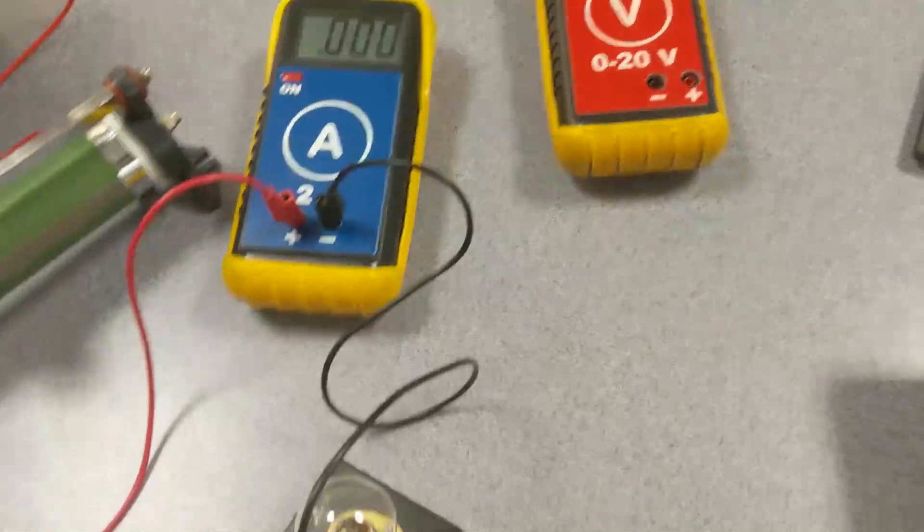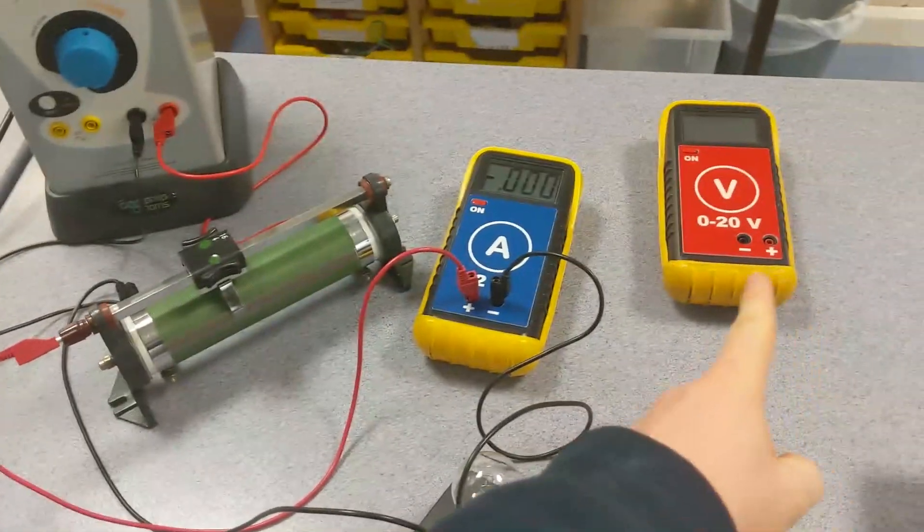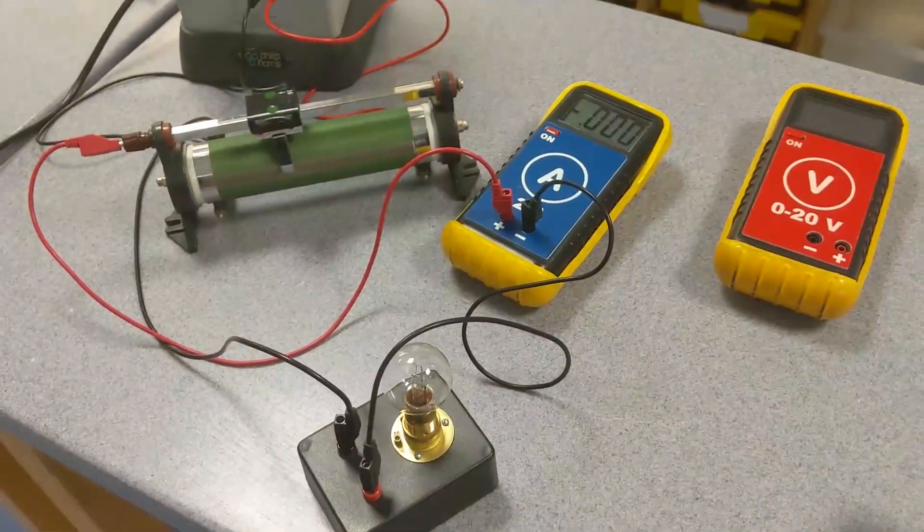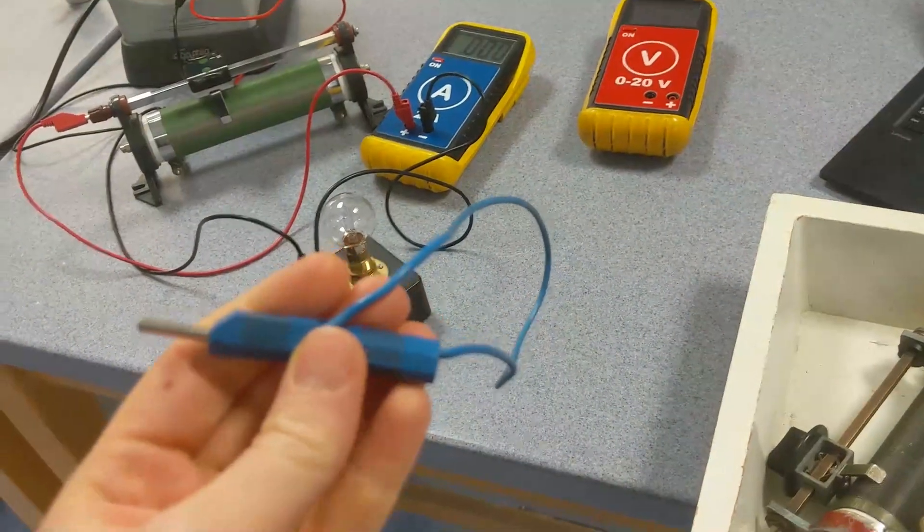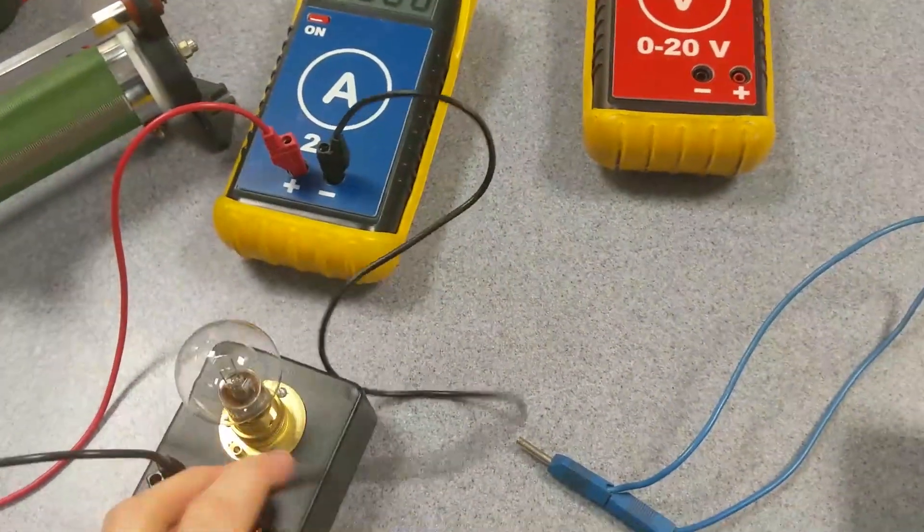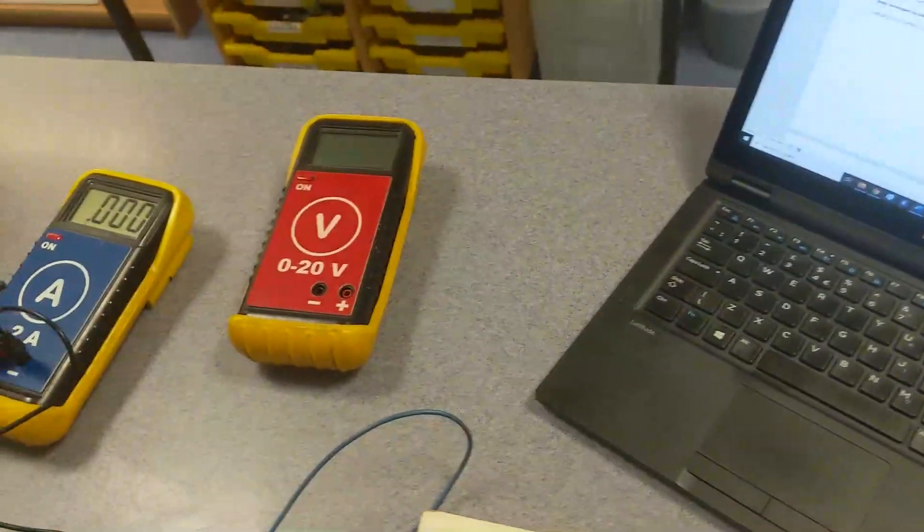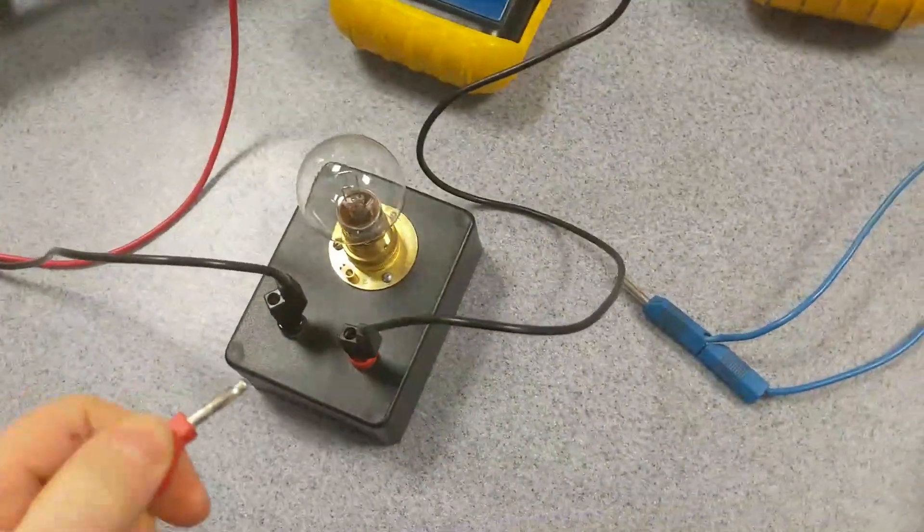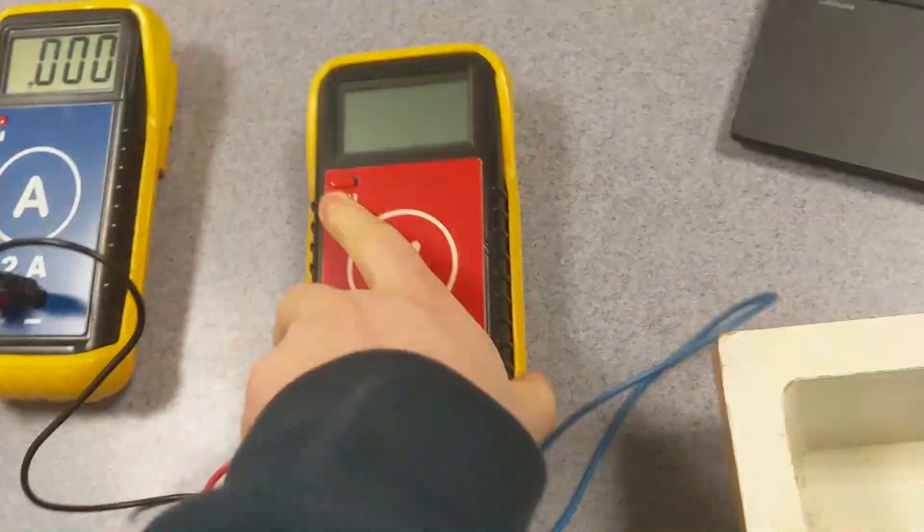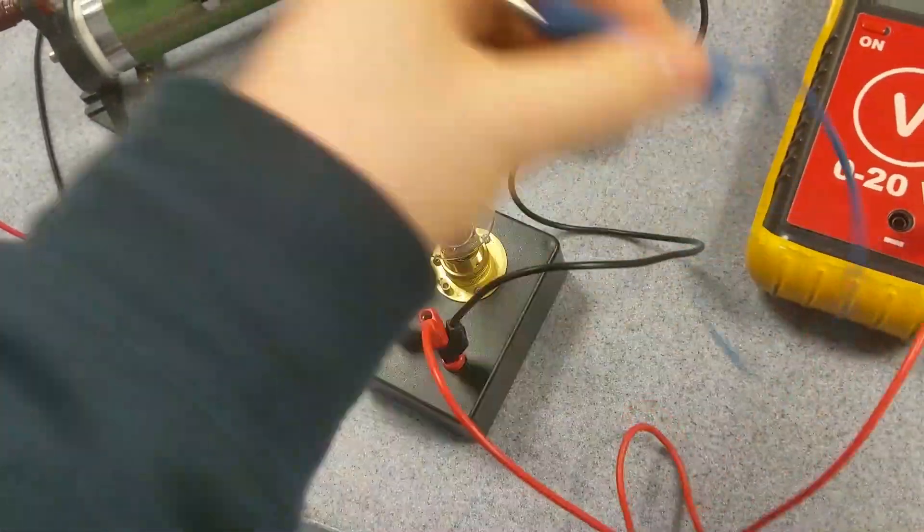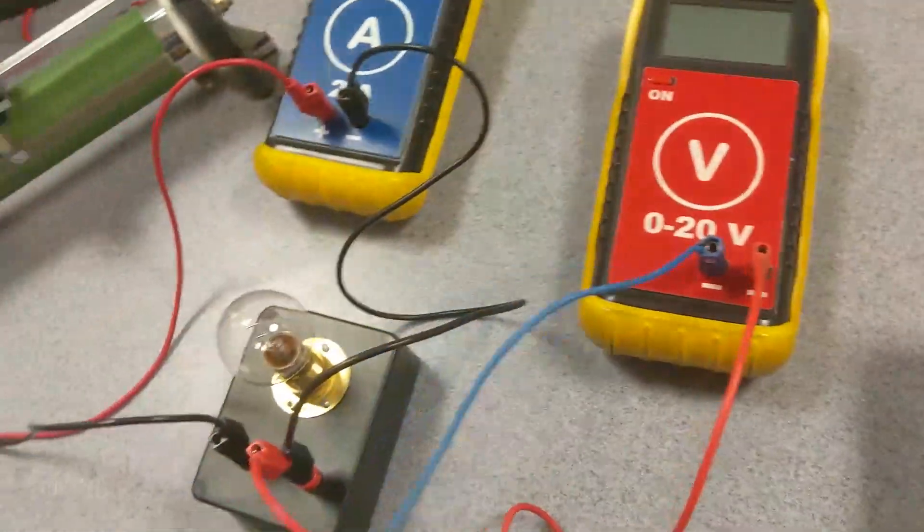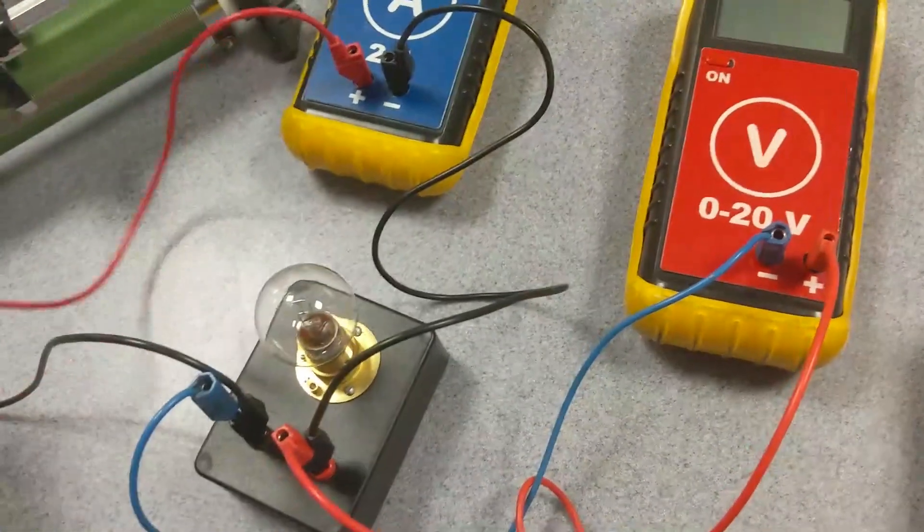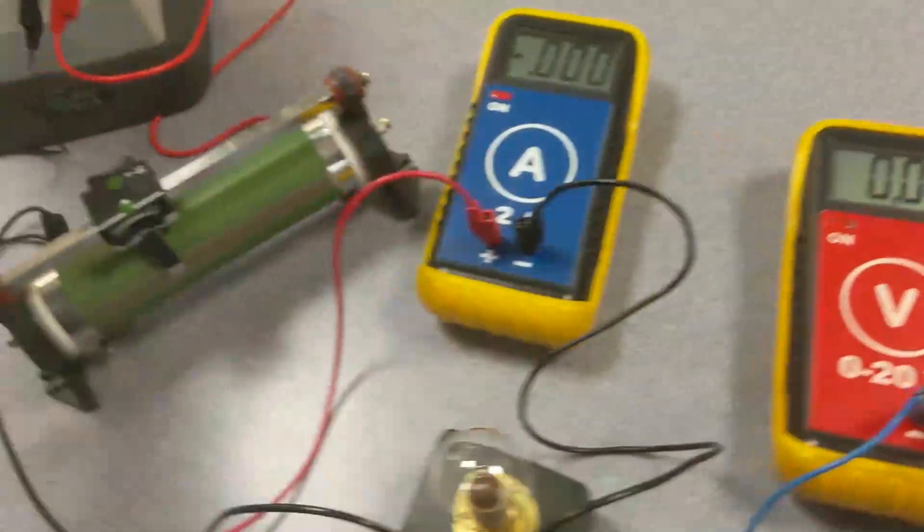Switch that on. Now whenever you're setting up a circuit, always save the voltmeter to last - it's my top tip. We need one more wire and we're going to put the voltmeter, connect the voltmeter even across the filament bulb to measure the potential difference.